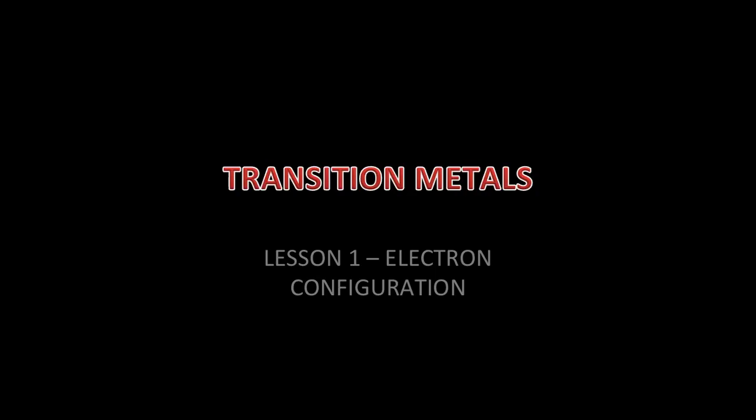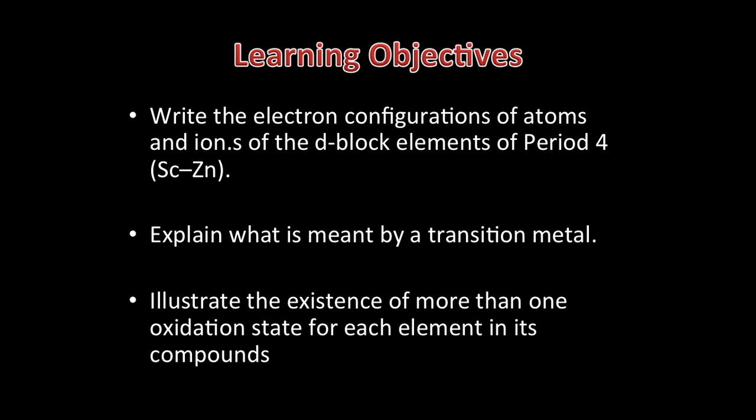This is the first lesson in the unit F325 on transition metals. In this lesson you'll learn how to write the electron configuration of the first period of the transition metals, period 4. You'll learn the definition of a transition metal, and finally we'll look at a particular property of transition metals, which is having a variable oxidation state.